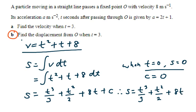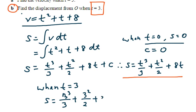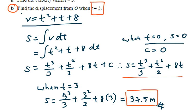Since the question asks for displacement when t is equal to 3, substitute t equals 3 into the equation: s equals 3 cubed over 3 plus 3 squared over 2 plus 8 times 3. Putting all the values into your calculator, the displacement equals 37.5 meters. Hence, the displacement when t equals 3 is 37.5 meters. Do remember to leave your answer in 3 significant figures.